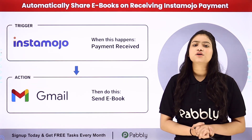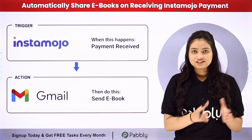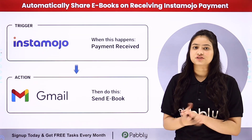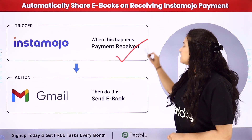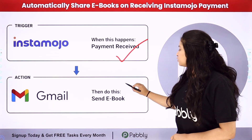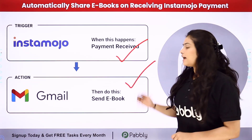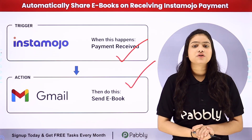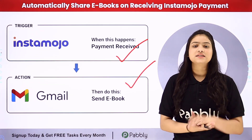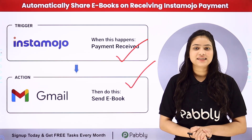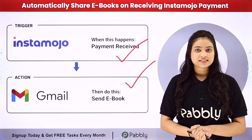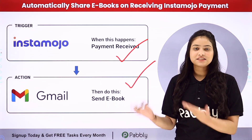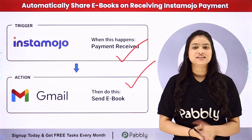Pabbly Connect works on two principles: trigger and action. In the trigger we are going to take Instamojo, and in the action we are going to take Gmail, and we will connect both of them to automate this entire process very easily. To learn this entire automation step by step, let me take you all to my screen.